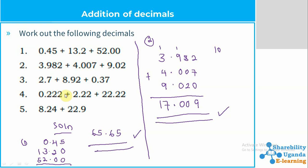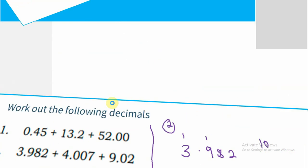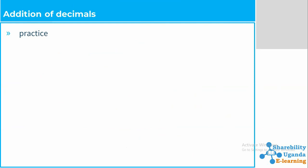Then we have 22.22. And number five, the one we shall end with, is 8.24 plus 22.9. So we want to carry out the operation of these and see what we get when we add these decimals. Let's try them out one by one.